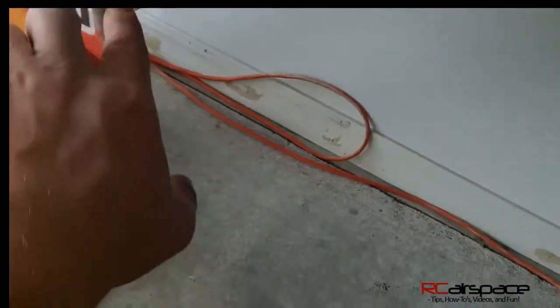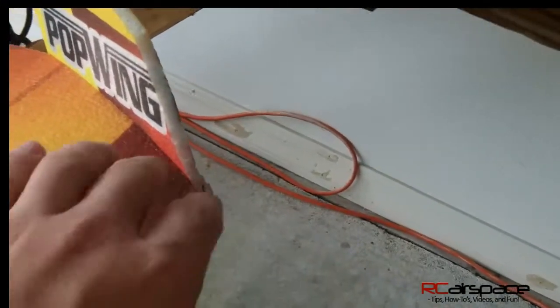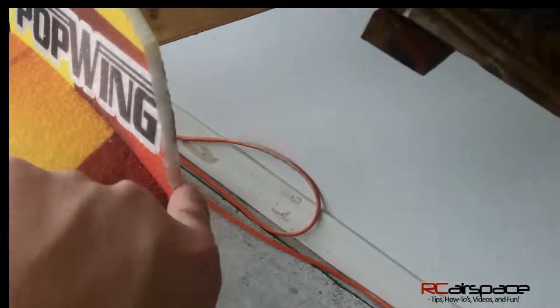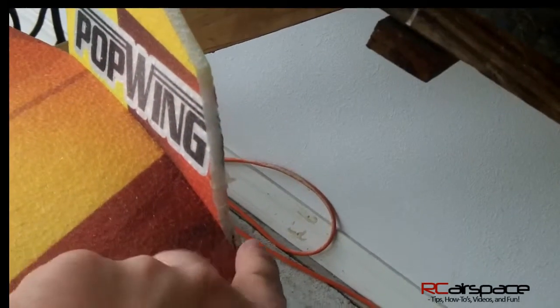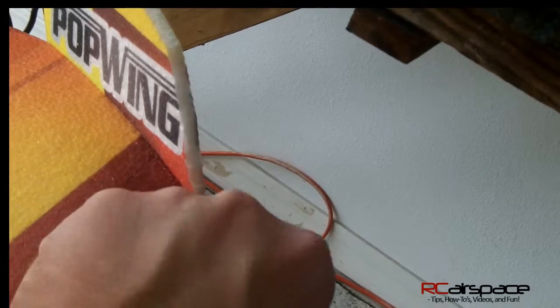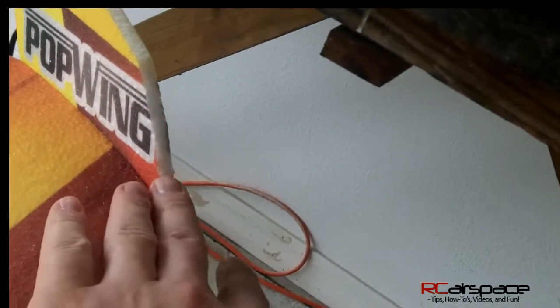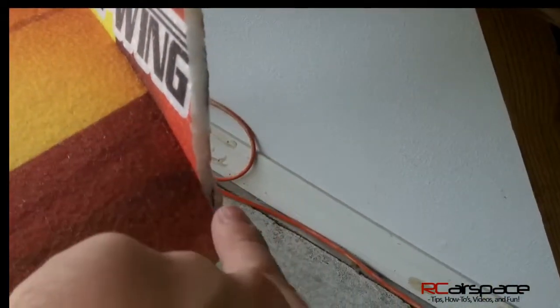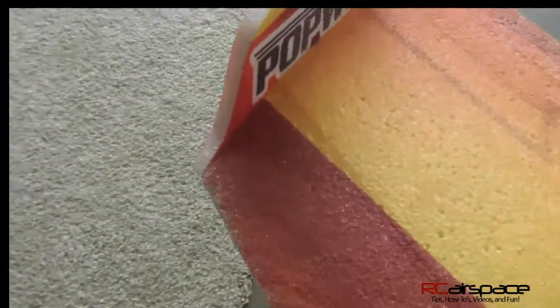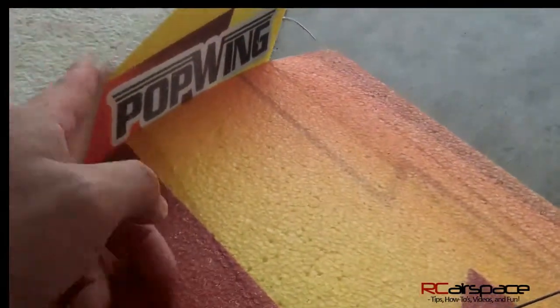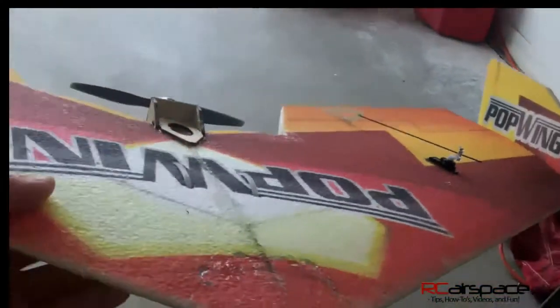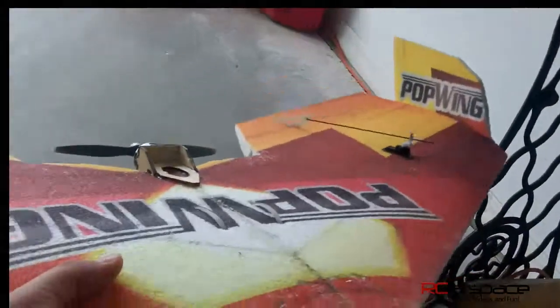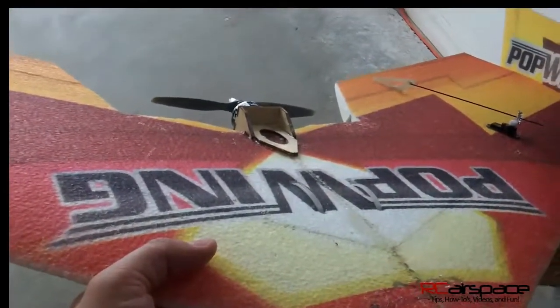One thing I also did, I took one of the bad landings I was telling about that actually notched out this area, actually took off part of my winglet here. What I did is I took a razor blade, I couldn't find the piece of foam and of course I would have hot glued that back in, but I took a razor blade and I just scored that off even to make it look nice again. Just to make it match the other side, I took the razor blade and I dished this in just a little bit to match. And again, no performance degradation.